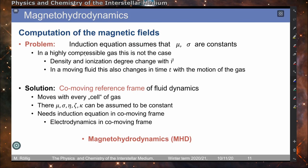When we compute the magnetic field, we have the problem that our induction equation assumes that the permeability and the sigma term are constants. This is not true when we look at a compressible gas such as the interstellar medium, because under such conditions the density and the ionization degree change with location, and in the moving fluid also change with time as the gas moves along.